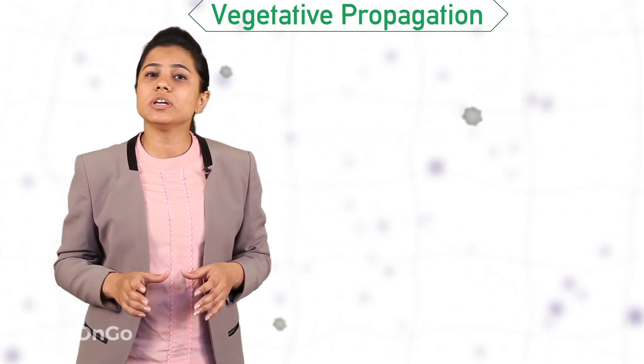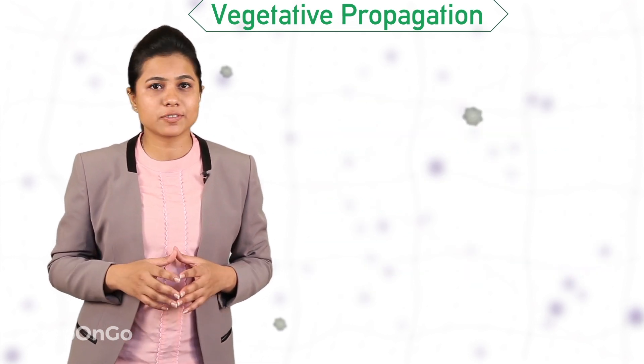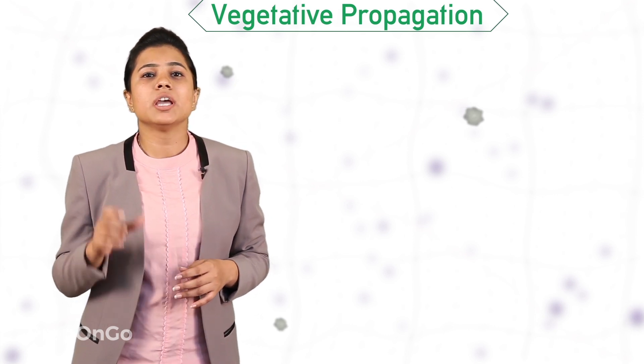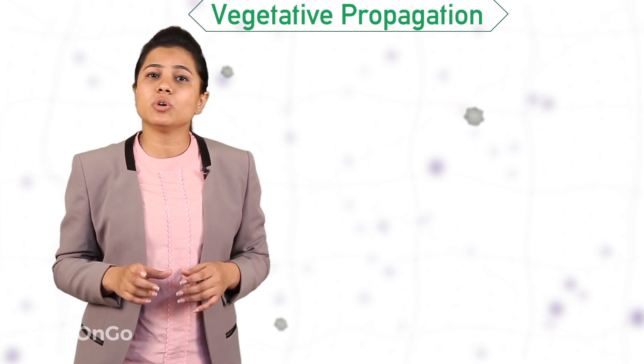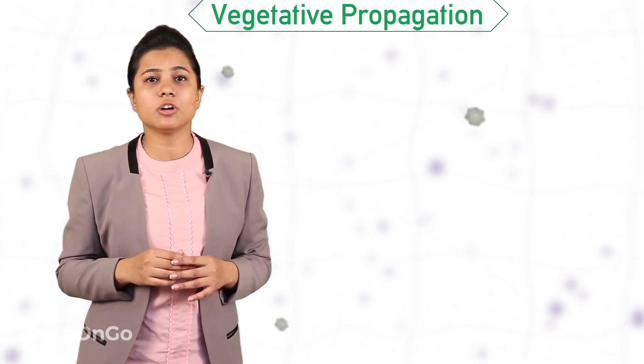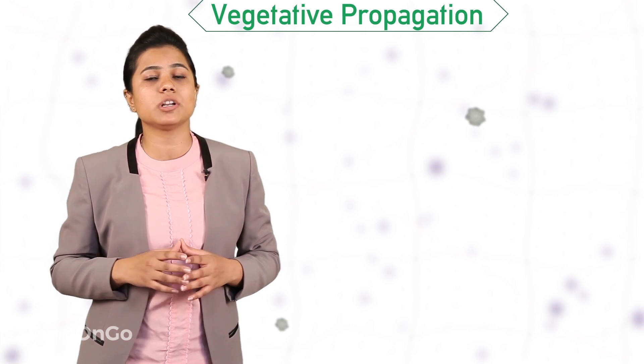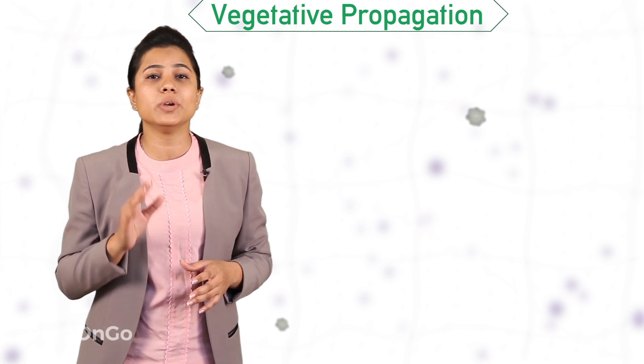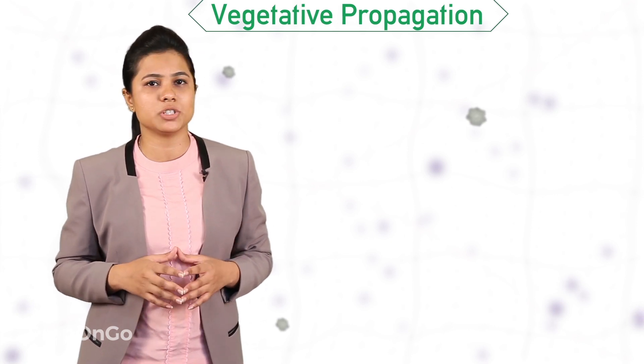In this video, we have seen vegetative propagation. In the next video, we are going to see the last method of asexual reproduction, which is spore formation. Thank you.